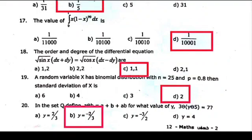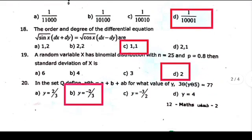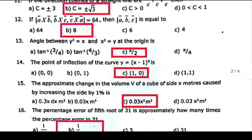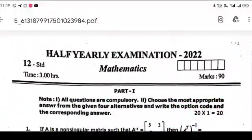Eighteenth, option C, one comma one. Nineteenth, option B, sorry option D, two. Twentieth, option B, y is equal to minus 2 by 3. So let me know if you have a correction in the comment box.